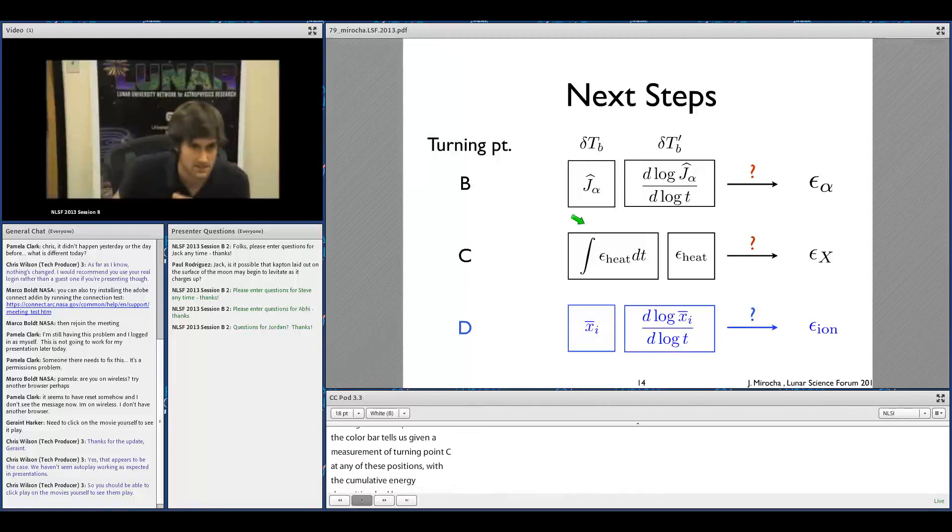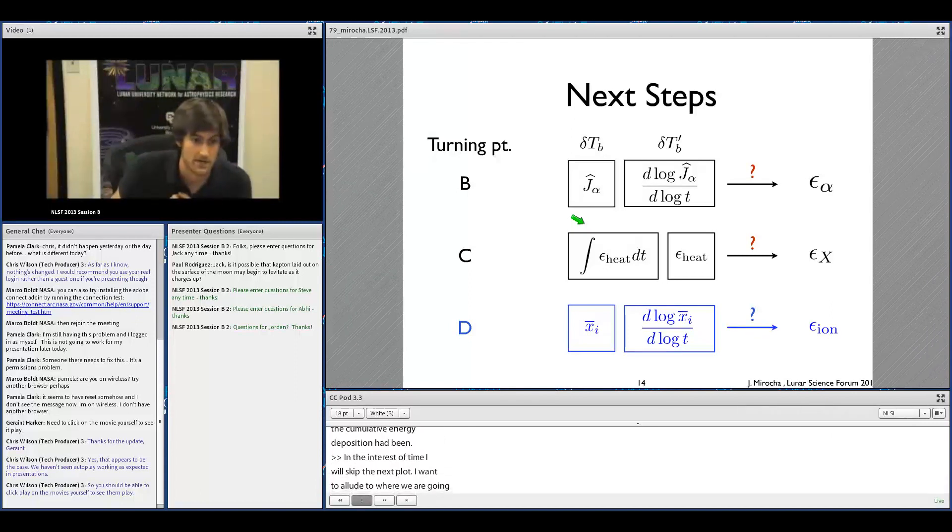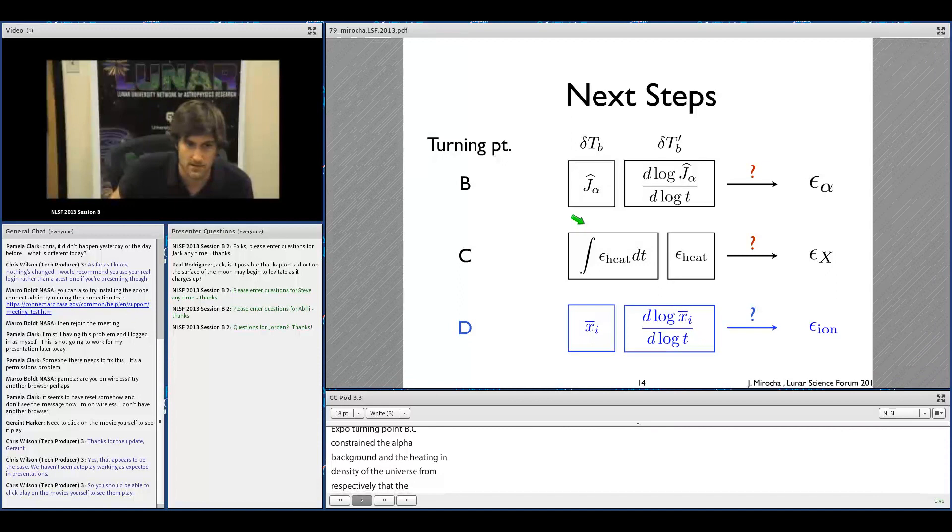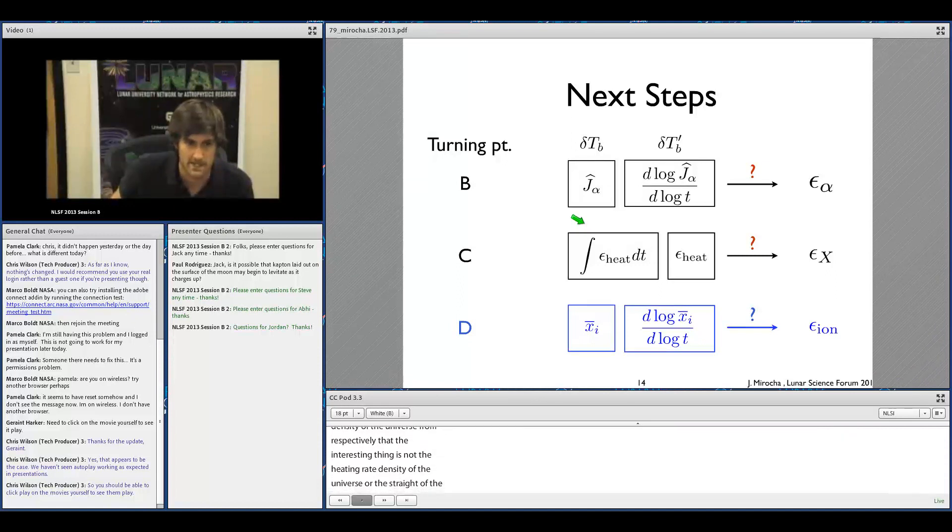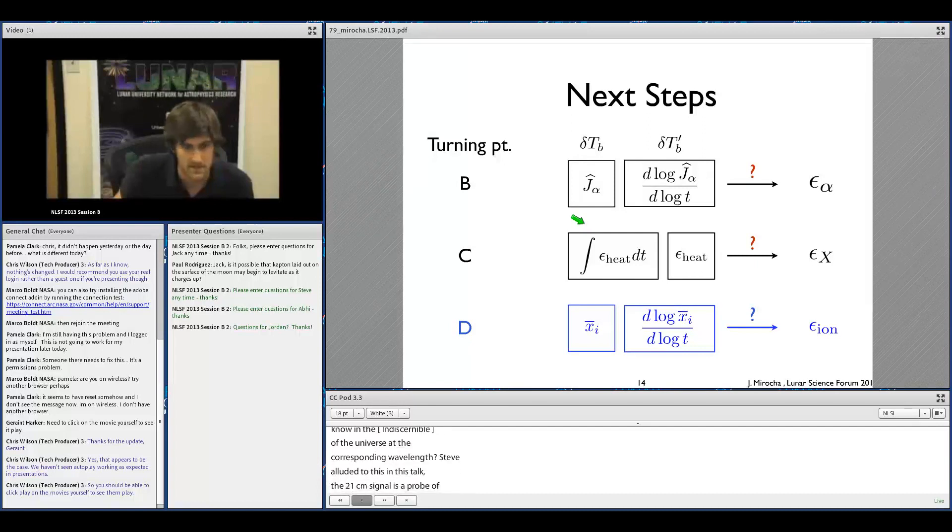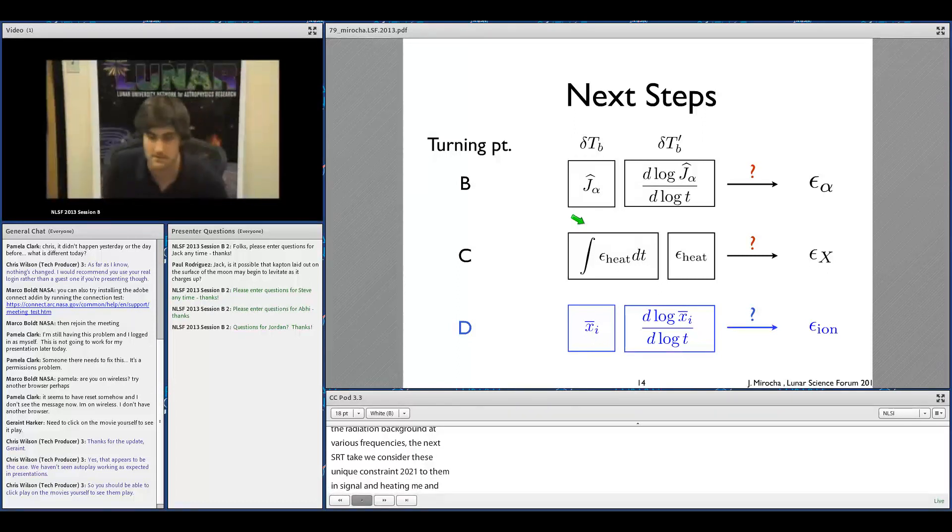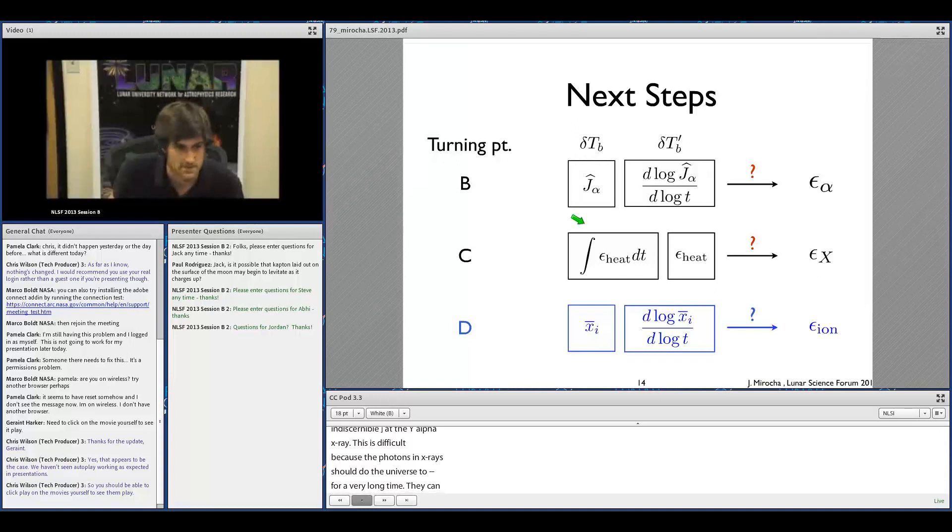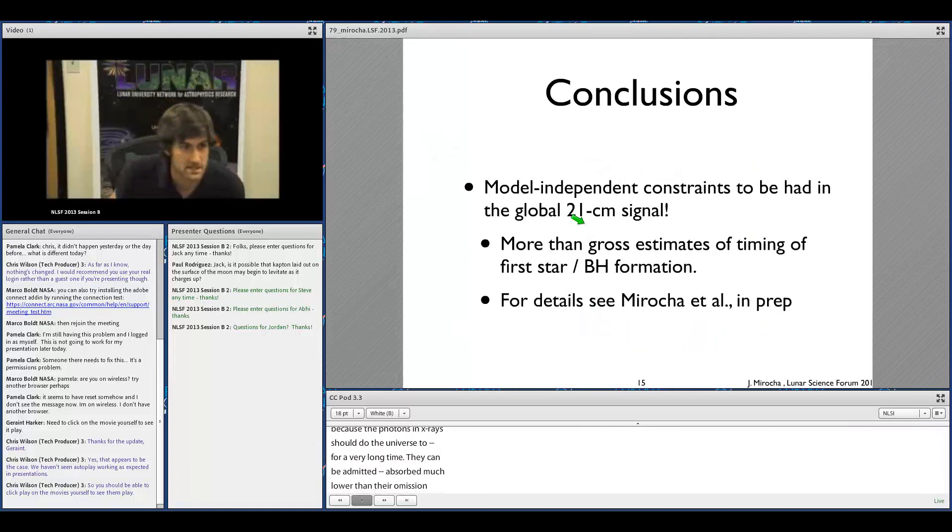In the interest of time, I'm going to skip the next plot. I told you that turning points B and C constrain the strength of the Lyman alpha background and the heating rate density of the universe, respectively. Now, the really interesting thing isn't the heating rate density or the strength of Lyman alpha background - what we really want to know is the emissivity of the universe at the corresponding wavelength, in the Lyman alpha band and the x-ray band. Steve alluded to this in his talk that the 21-centimeter signal is really a probe of the radiation background at various frequencies. So our next steps are to take what we consider these unique constraints from the 21-centimeter signal on the Lyman alpha background and heating rate and convert them into emissivities at Lyman alpha and the x-ray.